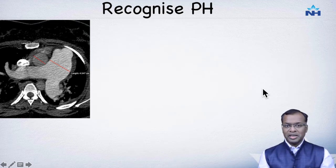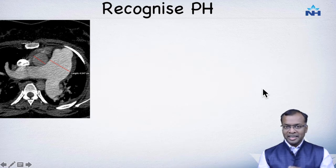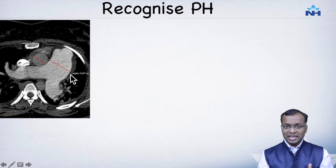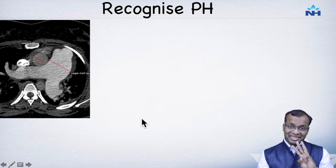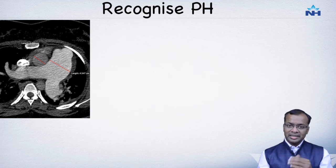Let's look at how we assess for pulmonary hypertension on CT. We do a contrast CT examination — a pulmonary artery angiogram. One key parameter is dilatation of the main pulmonary artery in relationship to the aorta. The main pulmonary artery should be less than 3 centimetres and should be smaller than the aorta. If either of these criteria is not met, we suggest pulmonary hypertension.